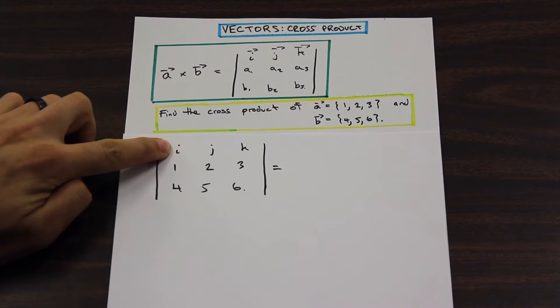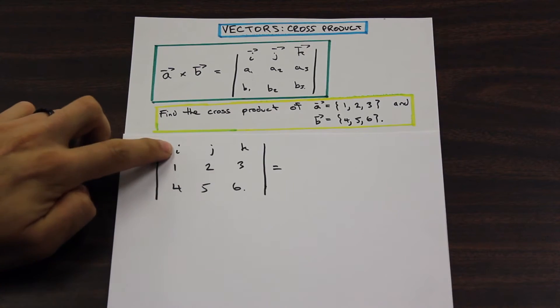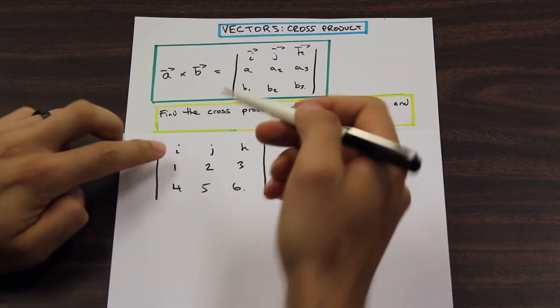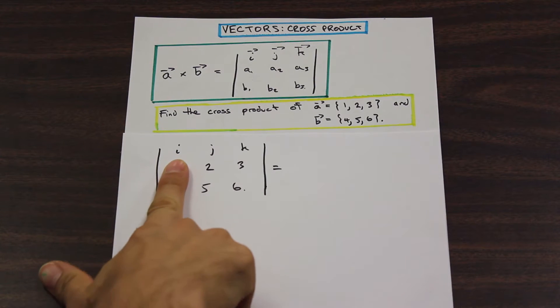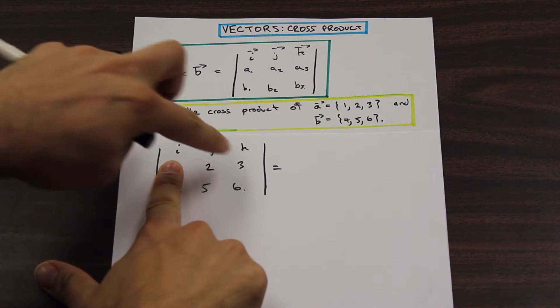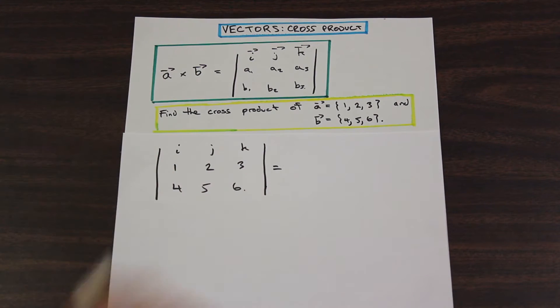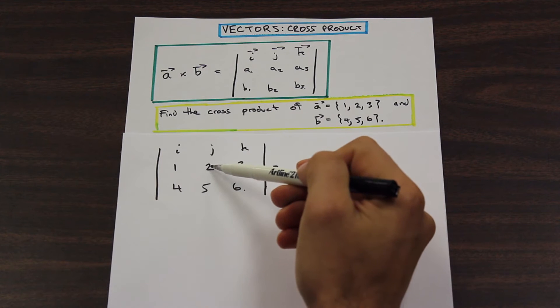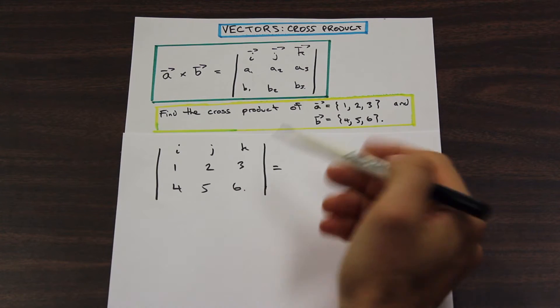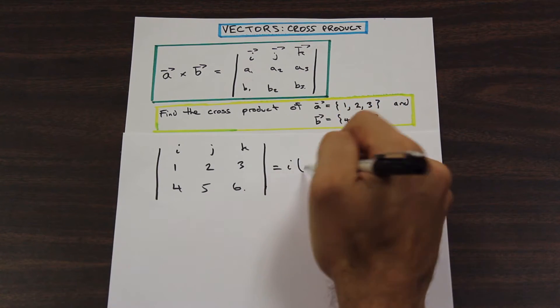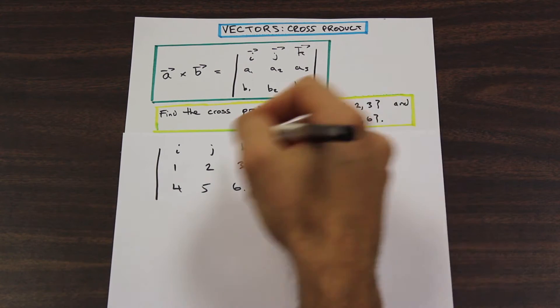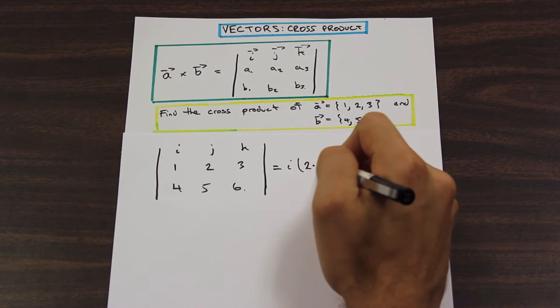What we're going to do, when we want to calculate the I component of our cross product here, what we're going to do is we're going to pretend that the column below this I component here doesn't exist. We're going to calculate on this box over here. So these four numbers, two, five, three, six, and we're going to multiply the top left corner with the bottom right corner. So we have I, this is the I component, is going to be two times six.